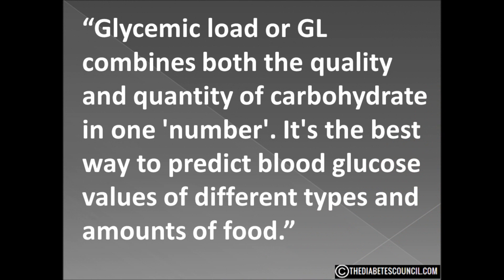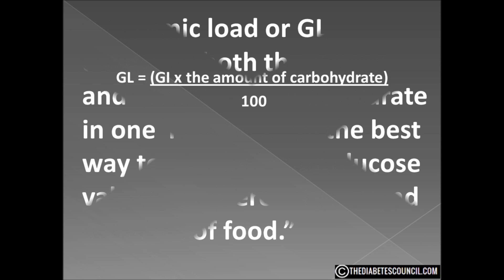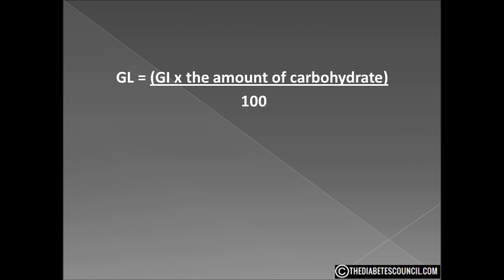I was very pleased to see the following on the GI website: glycemic load or GL combines both the quality and quantity of carbohydrate in one number. It's the best way to predict blood glucose values of different types and amounts of food. That really validates my hypothesis on the GL. The formula to calculate GL is very simple: you take the GI, multiply by the amount of total carbs — which is total carbs minus dietary fiber — then divide by 100.